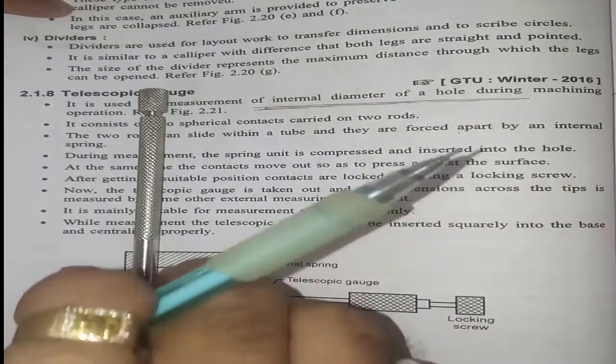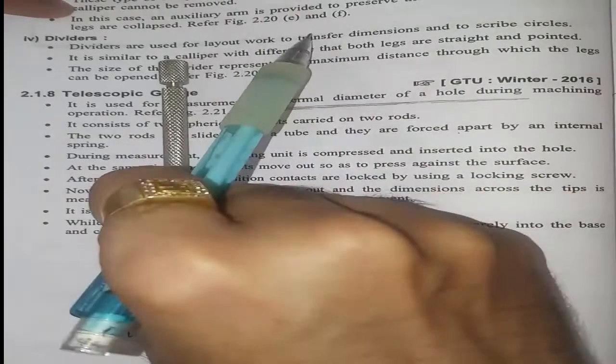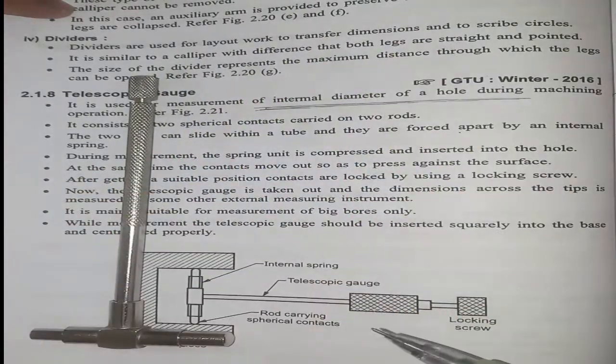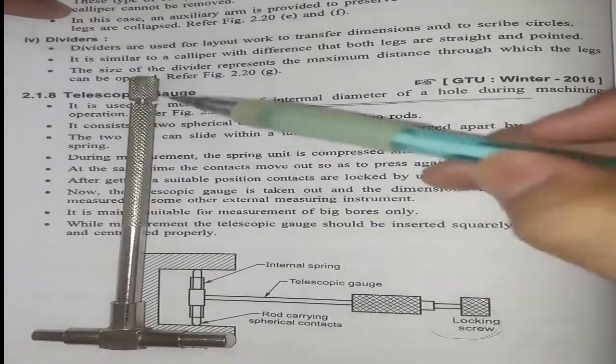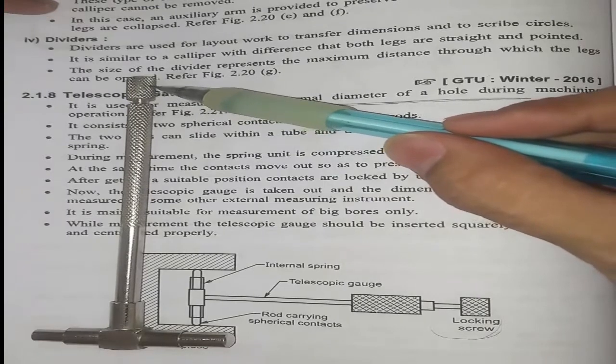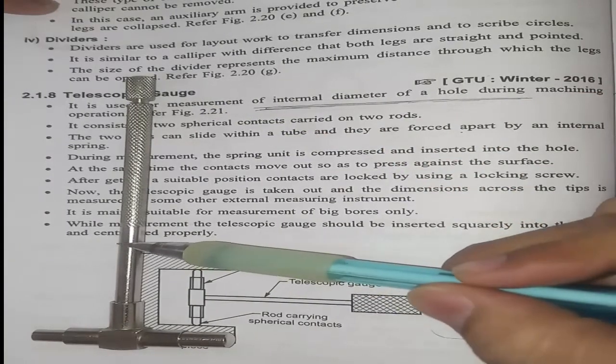You can see here this is a telescopic gauge, and meanwhile you can also see the figure. This is the locking screw here, this is the telescopic gauge.